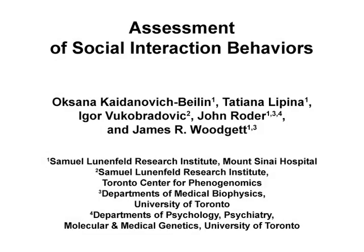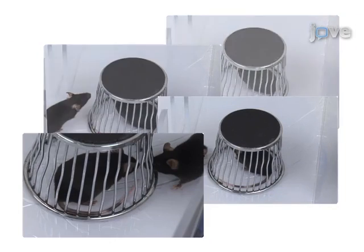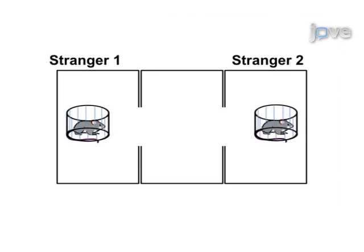The overall goal of the following experiment is to study social interaction and memory in mice. This method is unique in that it places the control mouse under a wire cup, allowing the experimental animal to freely initiate or terminate interactions while preventing direct contact.